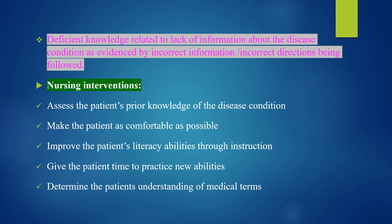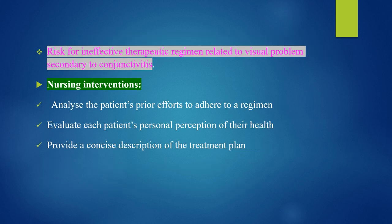Nursing diagnosis 4: Deficient knowledge related to lack of information about the disease condition, as evidenced by incorrect information and incorrect directions being followed. Nursing interventions: Assess the patient's prior knowledge of the disease condition, make the patient comfortable, improve patient literacy through instruction, give the patient time to practice new abilities, and determine the patient's understanding of medical terms.